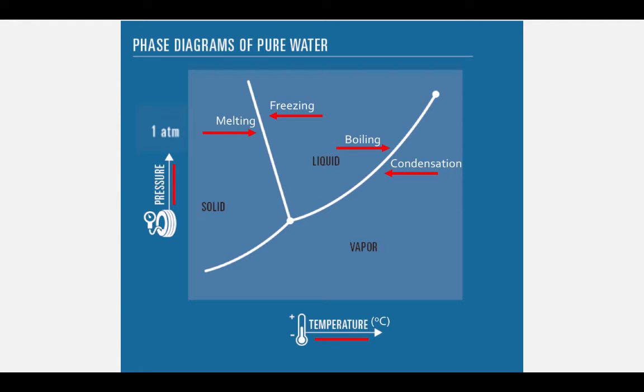The line between the solid and gaseous region is the sublimation line from solid to gas, and the deposition line from gas to solid.